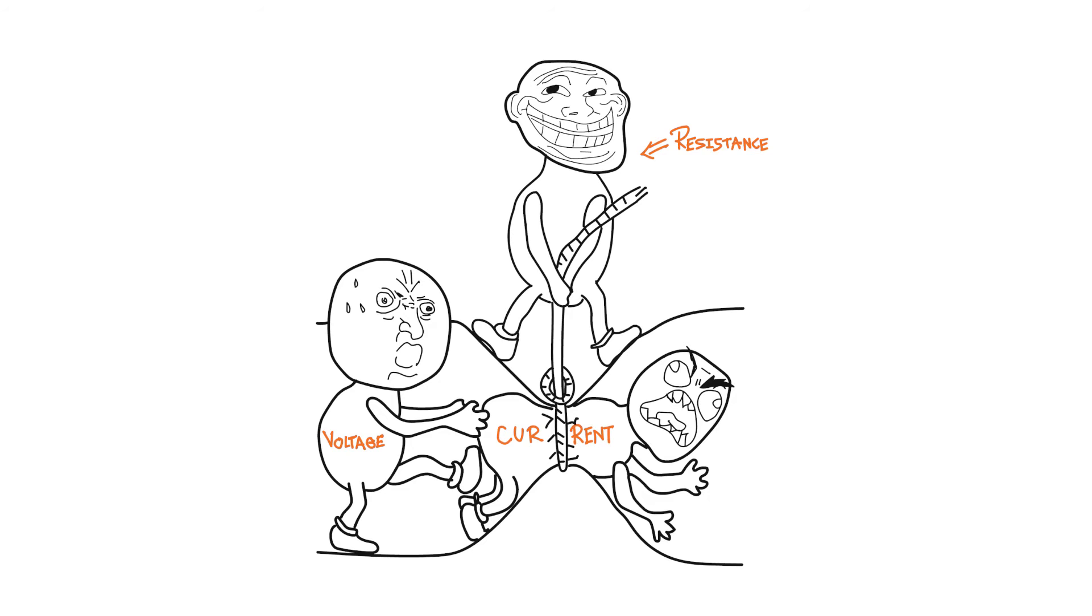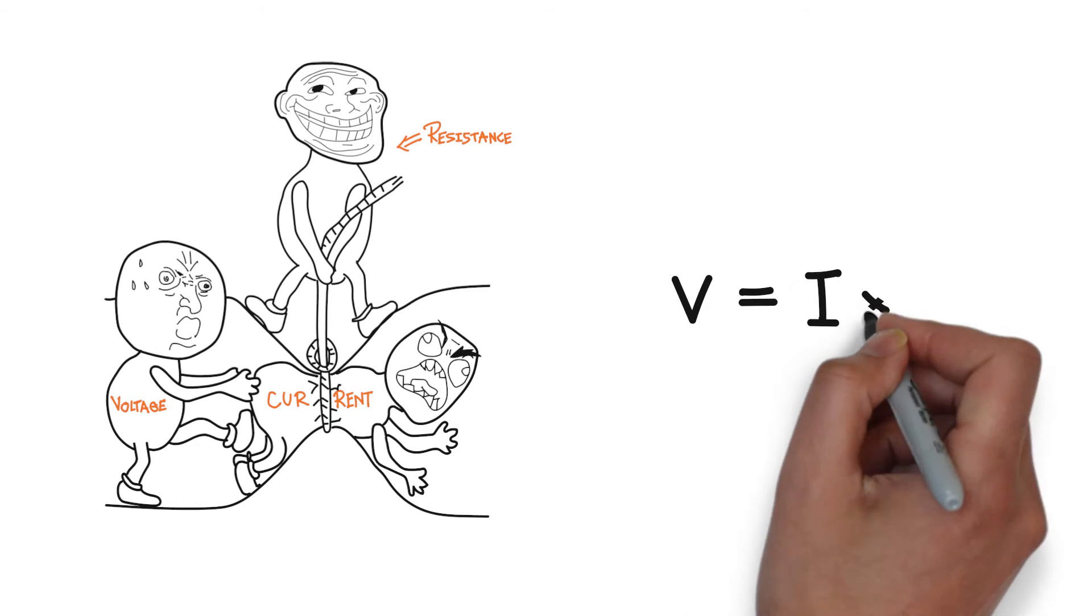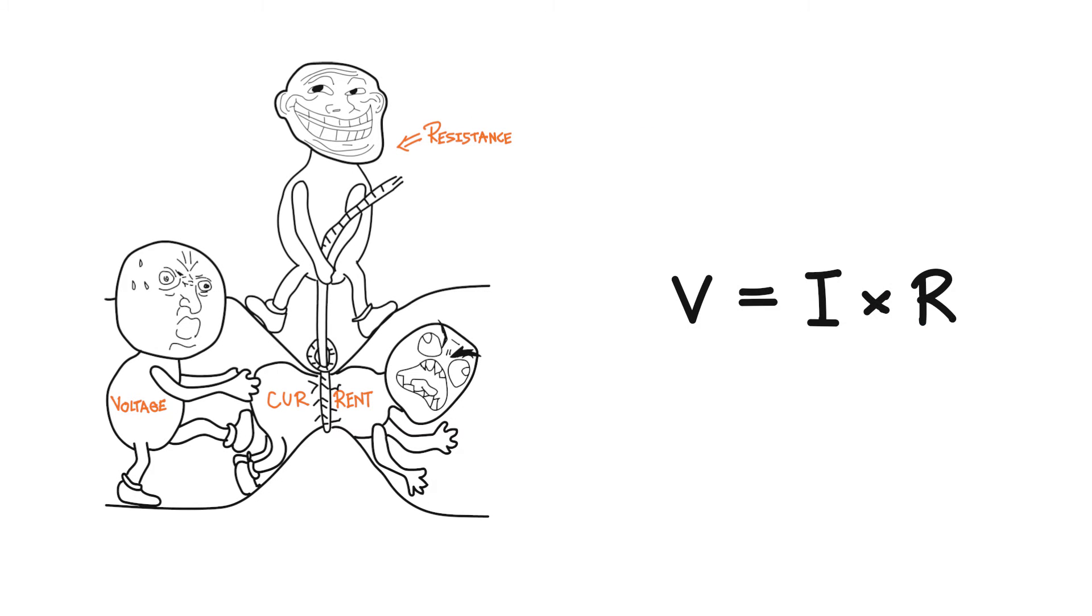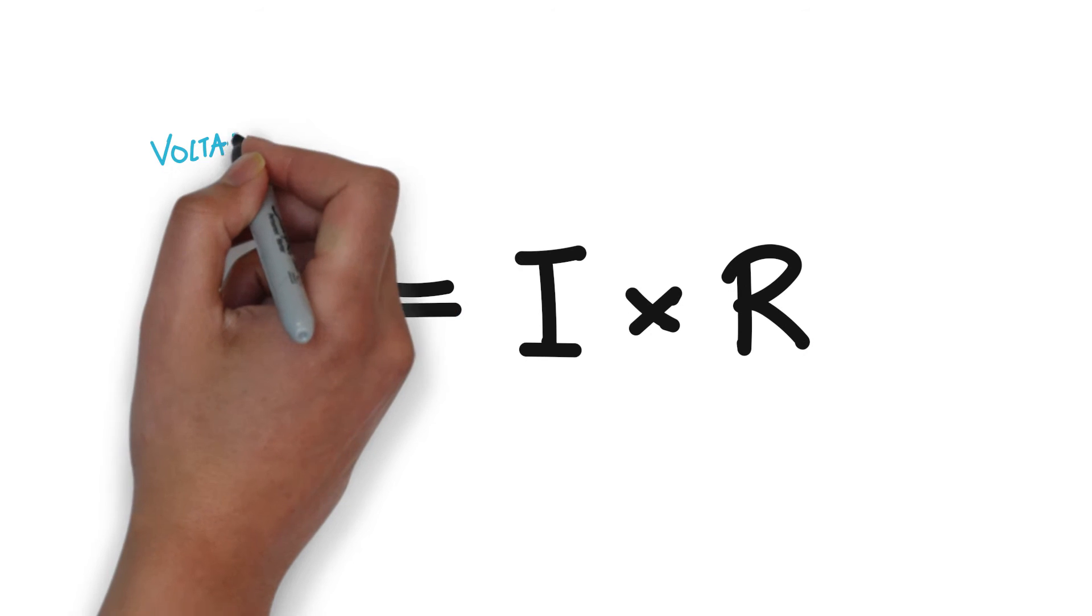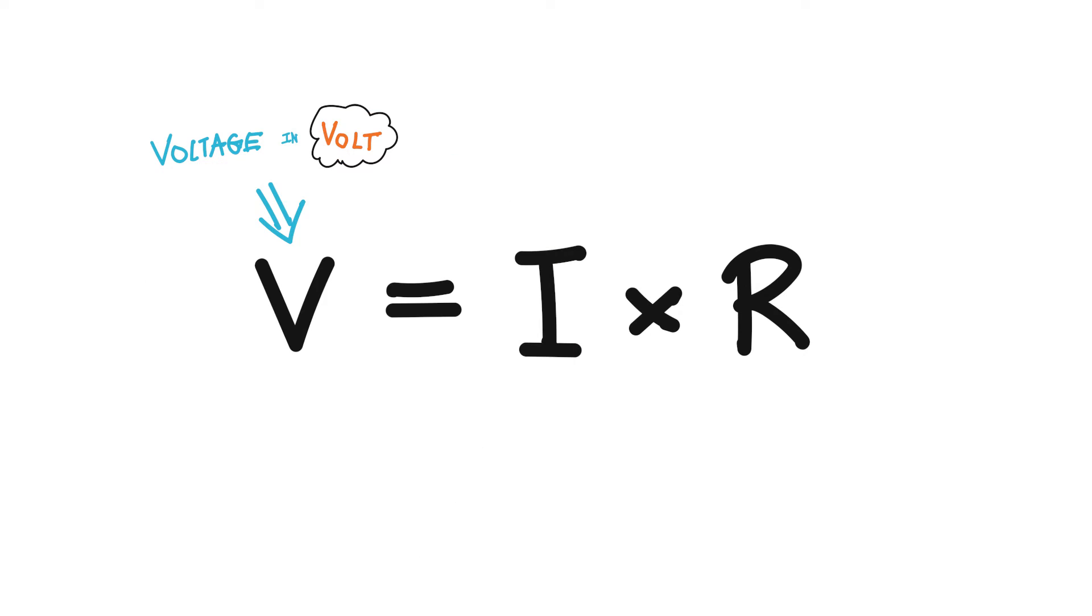Ohm's law states that voltage is equal to current times resistance. In this formula, V stands for voltage in volts, I stands for current in amperes, and R stands for resistance in ohms.